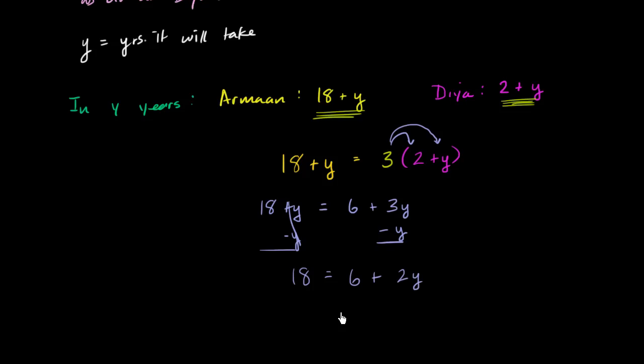Now we can get rid of the constant term here. So we will subtract six from both sides. Subtract six from both sides. 18 minus six is 12. The whole reason why we subtracted six from the right was to get rid of this. Six minus six is zero. So you have 12 is equal to 2y.